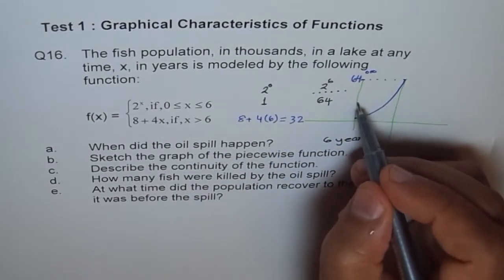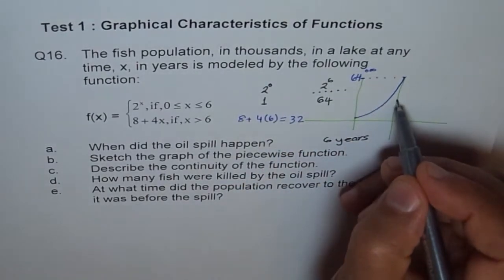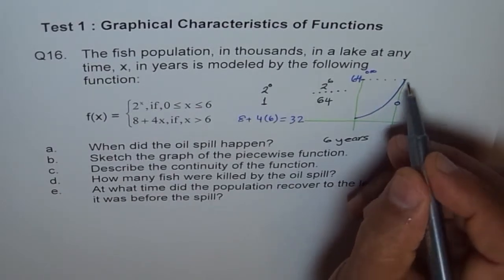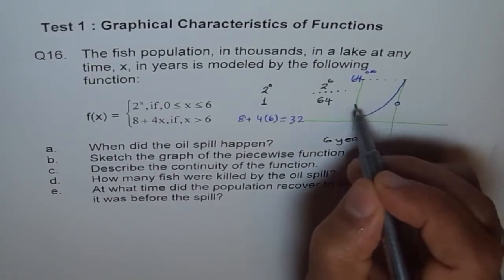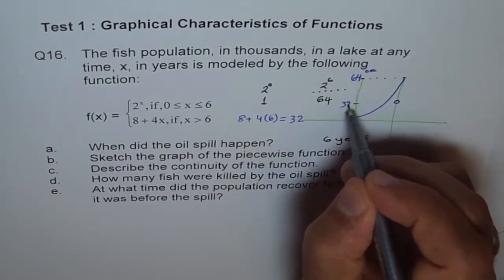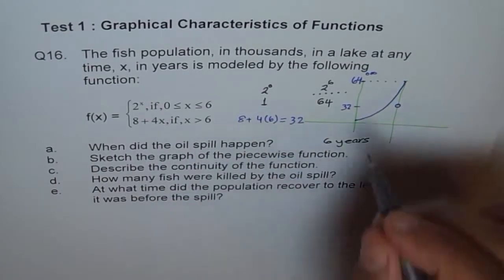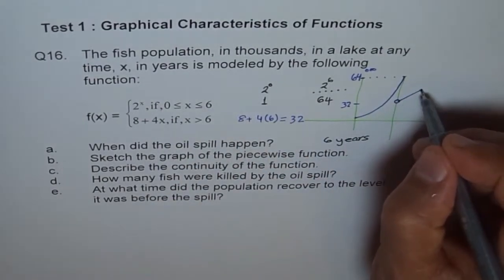So basically half of this. So this is our population after 6 years because of the oil spill. So this point is 32. And there's a linear function with a slope of 4. So I can draw like this. That's our graph.